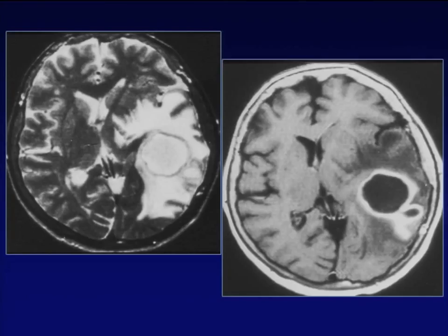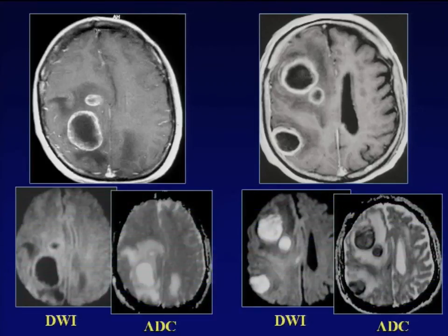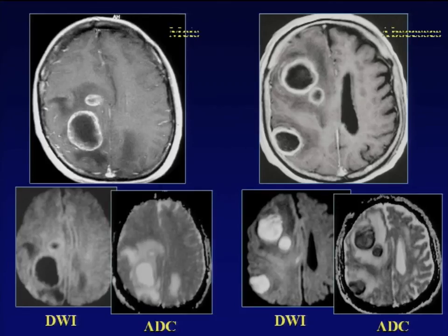Brain abscesses may produce images with vasogenic edema. The capsule is very dark on T2-weighted image when dealing with an abscess — thinner on the inner side — and there may be a daughter abscess. Using advanced techniques, it is very easy to differentiate: two patients, one with metastatic disease and one with brain abscess, may appear impossible to distinguish on conventional imaging. But using diffusion imaging and ADC maps, the abscess shows restricted diffusion — very bright on diffusion — with viscous material (pus) inside, while the metastatic disease shows necrotic composition.